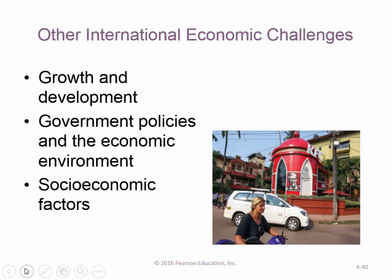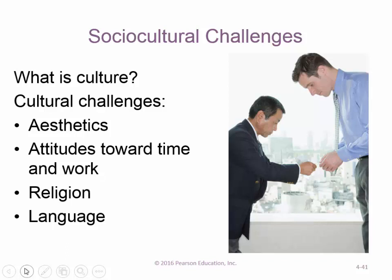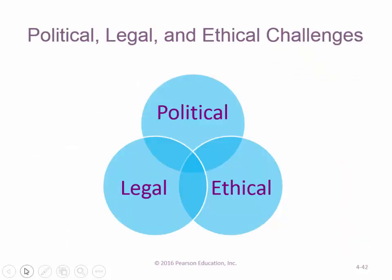Some of the challenges you have to face with international business include the policies of the government — you may have a relatively friendly government and then that changes, which could be a problem. One of the things happening in Asia now is we're not seeing as much cheap labor; the price of labor is going up in some of these countries. Japan has an aging population — that's a factor you need to think about. All of these demographic issues, as well as cultural issues, need to be thought about. We have political, legal, and ethical considerations as well.